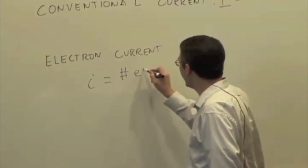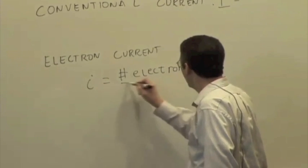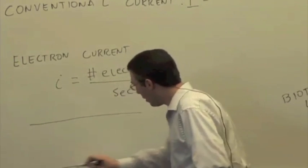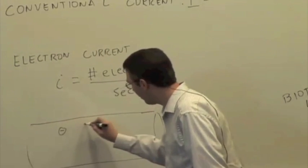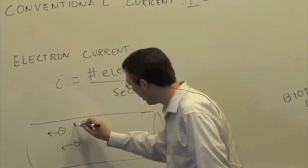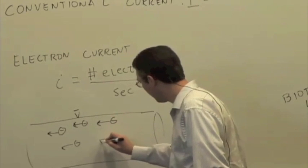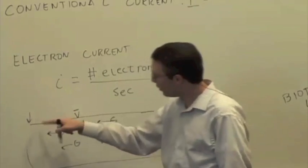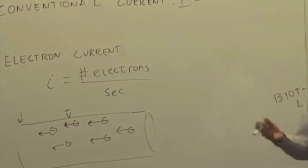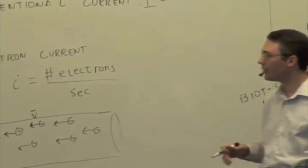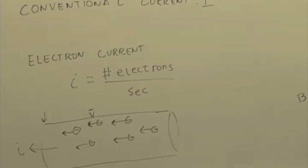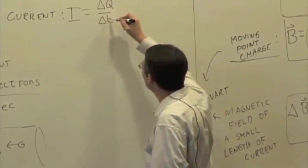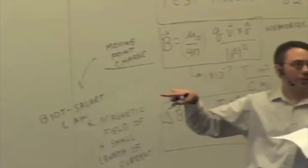The electron current, little i, is just the number of electrons that move through a wire. In our model of a metal, which has free electrons, if I have a length of wire with mobile electrons moving in some direction with some drift speed v-bar, then there's going to be some number of electrons that move past a point in the wire per second — that's the electron current. Conventional current capital I is the charge per second, written as delta Q over delta T, a rate of change of charge.